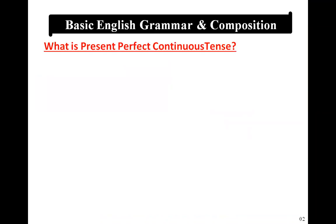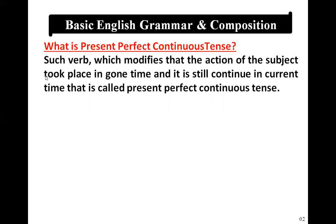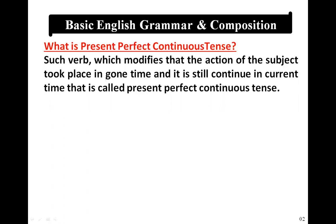First of all, what is Present Perfect Continuous Tense? What is the definition of Present Perfect Continuous Tense? Such a verb which signifies that the action of the subject took place in a gone time — and 'gone time' is a very important phrase here — and it is still continuing in the current time. That is called Present Perfect Continuous Tense.